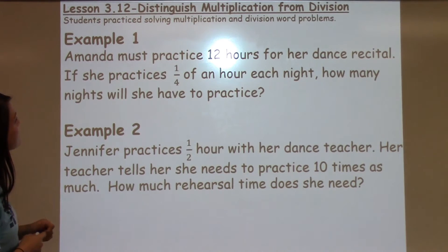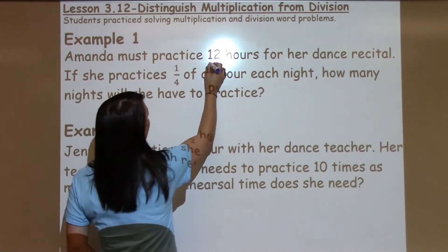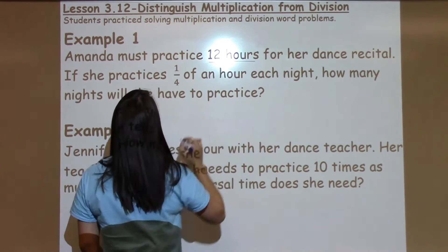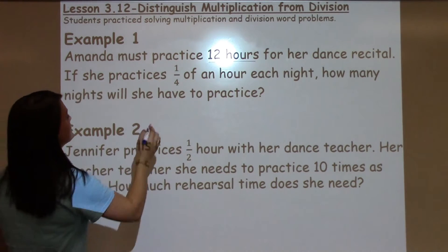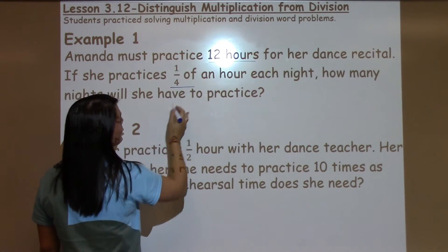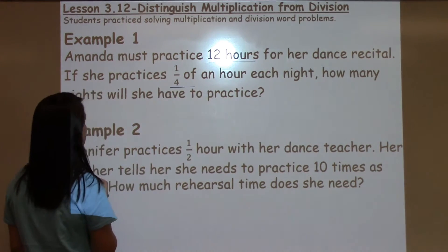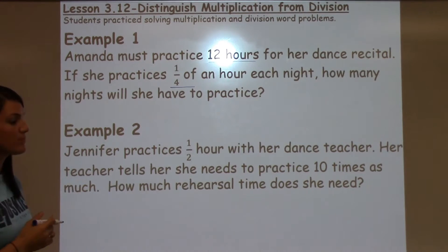The first one says: Amanda must practice 12 hours for her dance recital. If she practices one-fourth of an hour each night, how many nights will she have to practice?